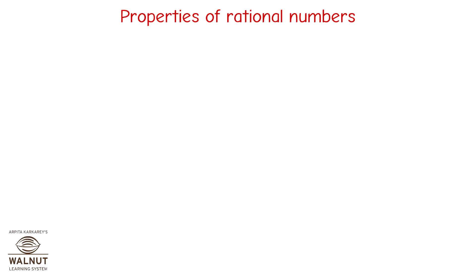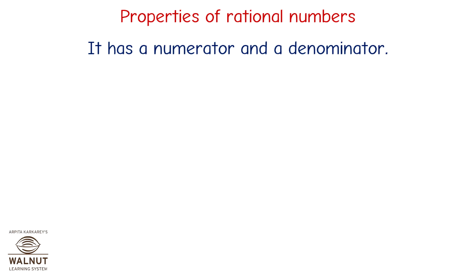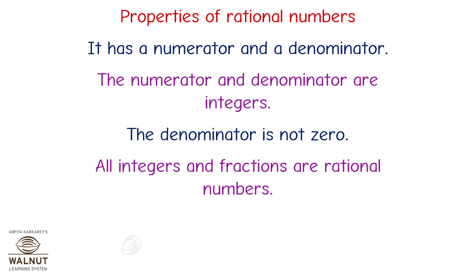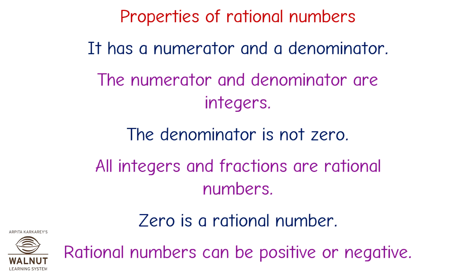Properties of Rational Numbers: A rational number has a numerator and a denominator. The numerator and denominator are integers, and the denominator is not zero. All integers and fractions are rational numbers. Zero is a rational number. Rational numbers can be positive or negative.